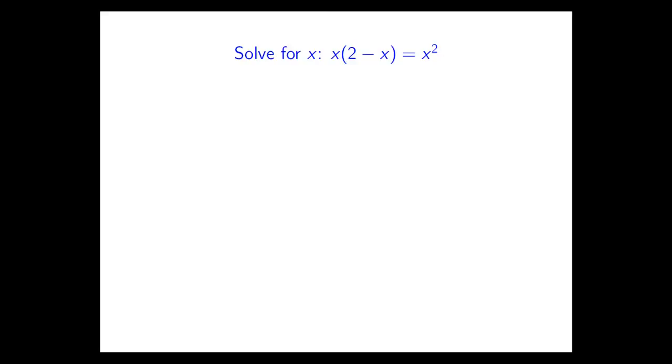Now that was a fairly contrived example that we just saw. Here's a more practical problem where division by 0 may turn out to give us a hard time. We are asked to solve this equation for x. x times 2 minus x equals x squared. What is the solution or solutions, if any, to that problem?